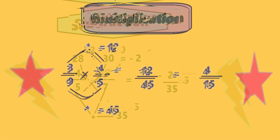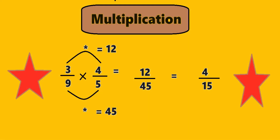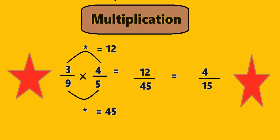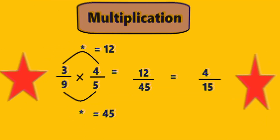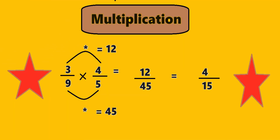Now let us take the fraction multiplication. First example: 3 by 9 into 4 by 5. Now multiply 3 into 4 which will give us 12, and that is the numerator. And 9 into 5 which will give us 45, and that is the denominator. The answer is 12 divided by 45, and that gives us 4 divided by 15.